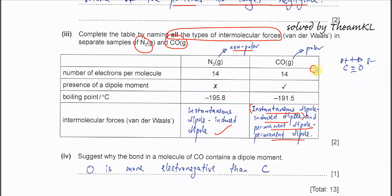Let's say there is another molecule here. Partial positive, partial negative. They will form PDPD forces. So in CO, there are two types of intermolecular force: IDID and PDPD.